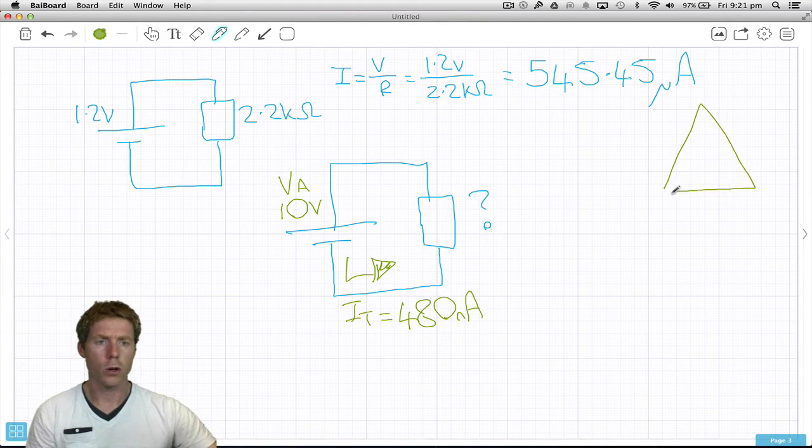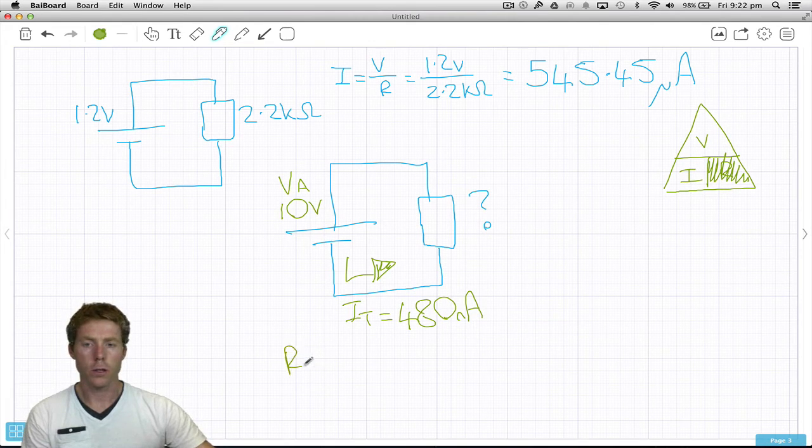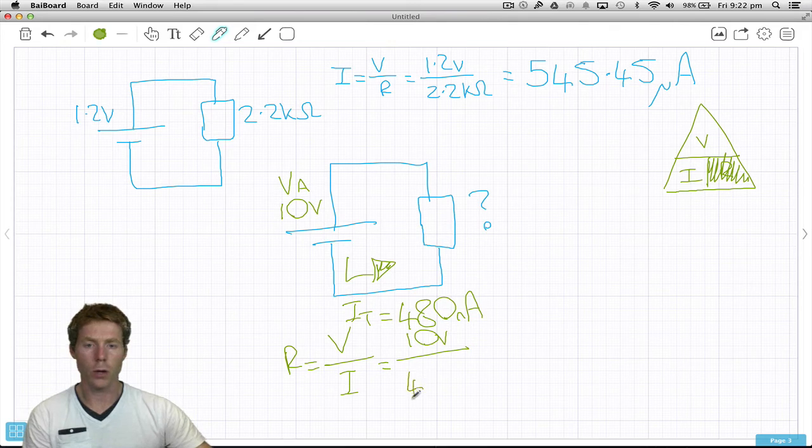Let's draw up our Ohm's law triangle: voltage, current, resistance. We want resistance. To get that, it's voltage divided by current.